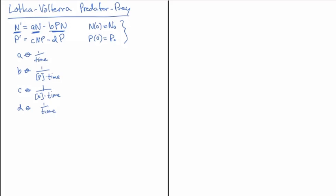We have two pure time constants here: 1 over a and 1 over d. Those are the ones that make the most sense to scale time by, and I'm going to choose a because that's the birth term. So we're going to define a new time variable τ which scales t — the product of a with t has no units, so that's an acceptable non-dimensionalization of time.